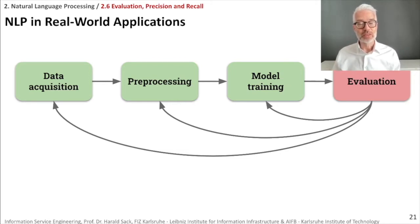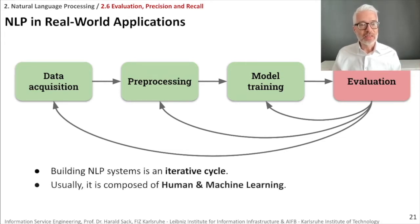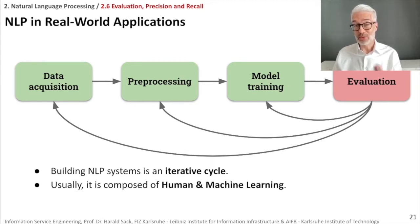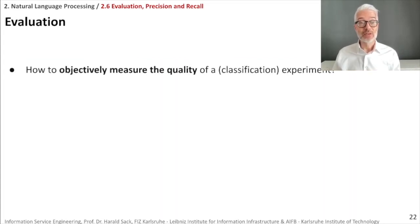To remind you: building NLP systems is an iterative cycle. It's composed of human and machine learning, which means you use machine learning techniques to train the model, but based on the evaluation you learn how to either add data, change your data, further pre-process your data, or change your model accordingly. So it's composed of both human as well as machine learning.